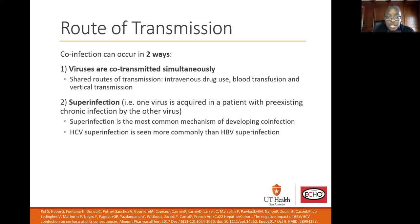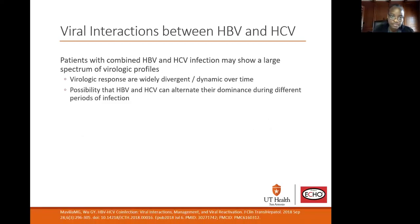Superinfection is the most common mechanism of developing co-infection. Hepatitis C superinfection is seen more commonly than hepatitis B superinfection. Patients with combined hepatitis B and hepatitis C may show a large spectrum of virologic profiles. The virologic responses are widely divergent and dynamic over time, with the possibility that hepatitis B and hepatitis C can alternate dominance during different periods of infection.